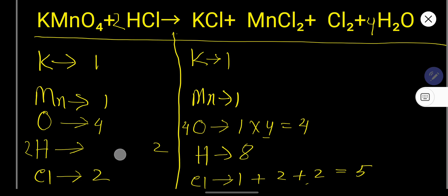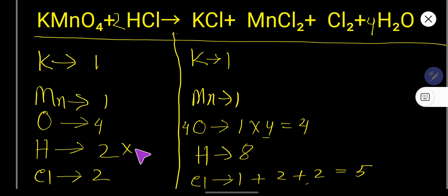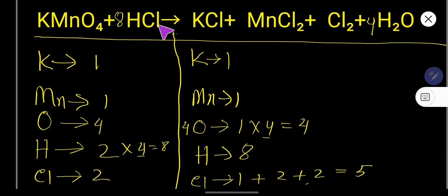On the left-hand side we currently have only 2 hydrogen from HCl. To balance hydrogen, we need 8 on the left but have 2, so multiply HCl by 4 — place coefficient 4 before HCl, giving 4 times 2 equals 8 hydrogen. Now place coefficient 8 before HCl. The number of chlorine from HCl is now 8. Checking: potassium 1-1, manganese 1-1, oxygen 4-4, hydrogen 8-8 — all balanced.